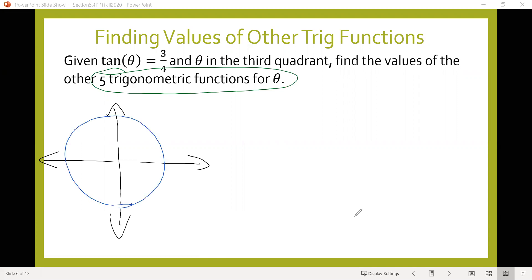I've got an angle theta that starts on the positive part of the horizontal axis, then rotates around into the third quadrant, which is the bottom left. As a reminder, the quadrants are numbered one through four counterclockwise. Our angle theta ends up in the third quadrant.